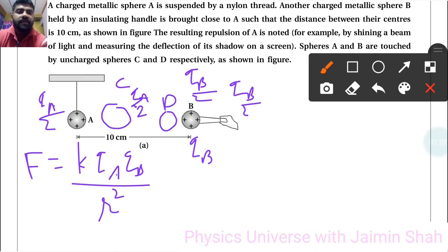Here this is D. So D has QB by 2 and B has now QB by 2.